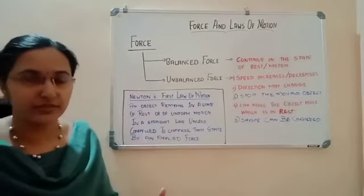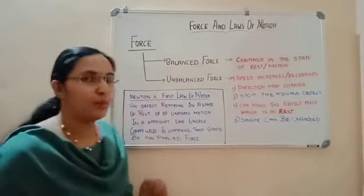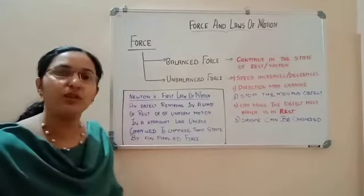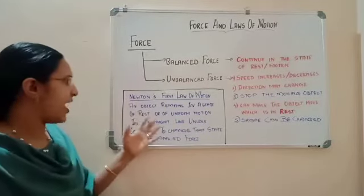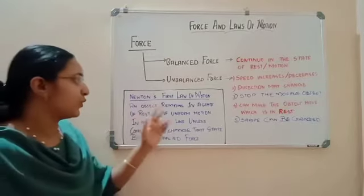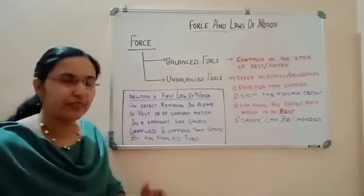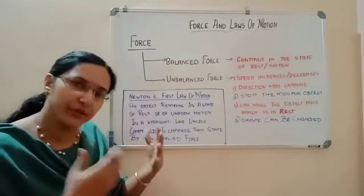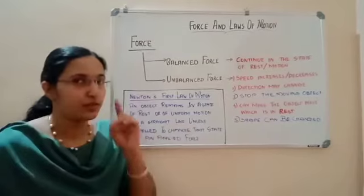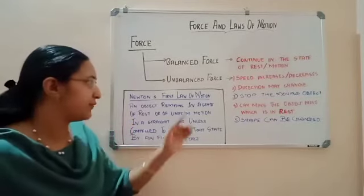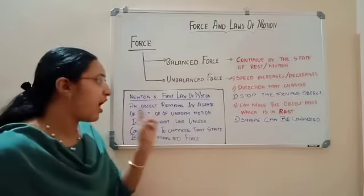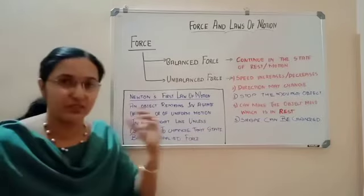Based on balanced and unbalanced force, Isaac Newton — a well-known physicist — formulated a law known as Newton's First Law of Motion. It states that an object remains in a state of rest or of uniform motion in a straight line. One condition is that the uniform motion must be in a straight line, unless compelled to change that state.